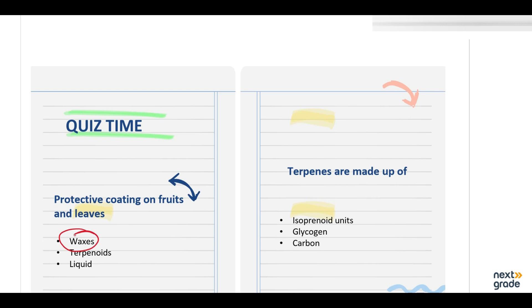Then the second one is that terpenes are made up of isoprenoid unit, glycogen or carbon. As we have just learned that terpenes are made up of isoprenoid units. So this one is the correct.